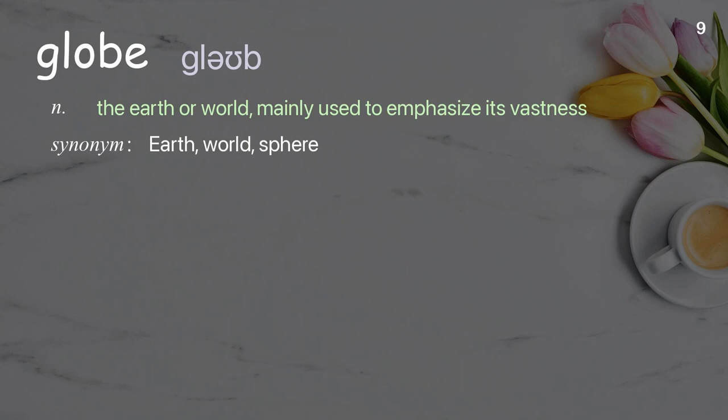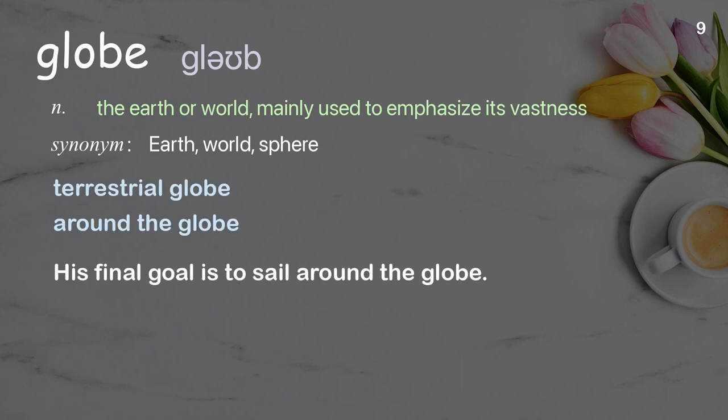Globe: The earth or world, mainly used to emphasize its vastness. Examples: Terrestrial globe. Around the globe. His final goal is to sail around the globe.